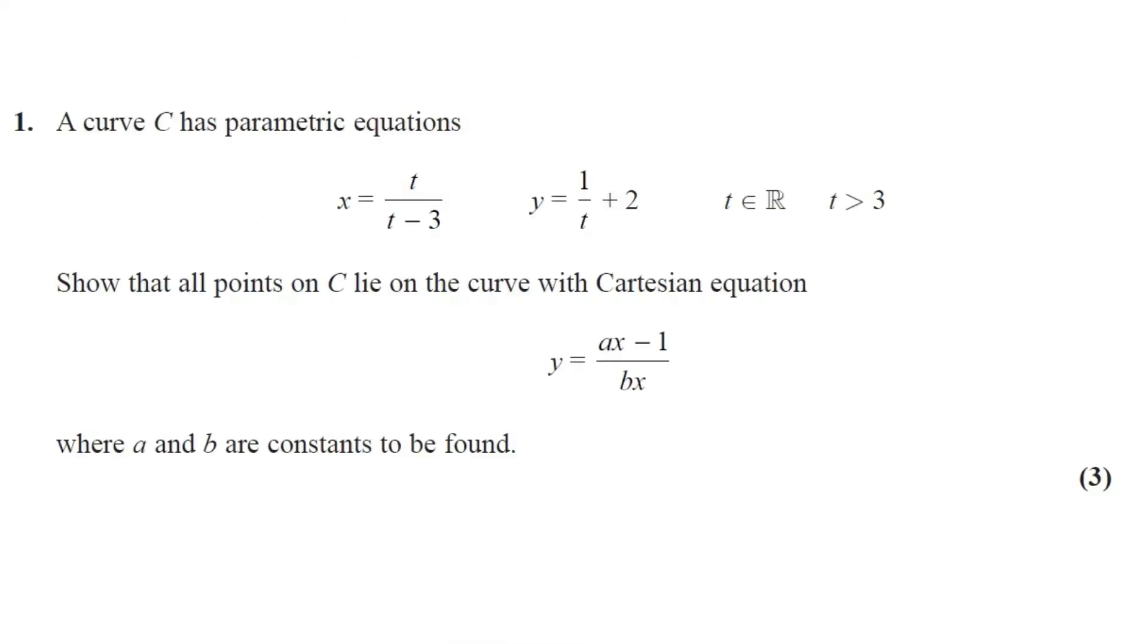Question number 1. A curve C has parametric equations x equals t over t minus 3 and y equals 1 over t plus 2. Show that all points on C lie on the curve with Cartesian equation y equals ax minus 1 divided by bx, where a and b are constants to be found. This question got three marks.